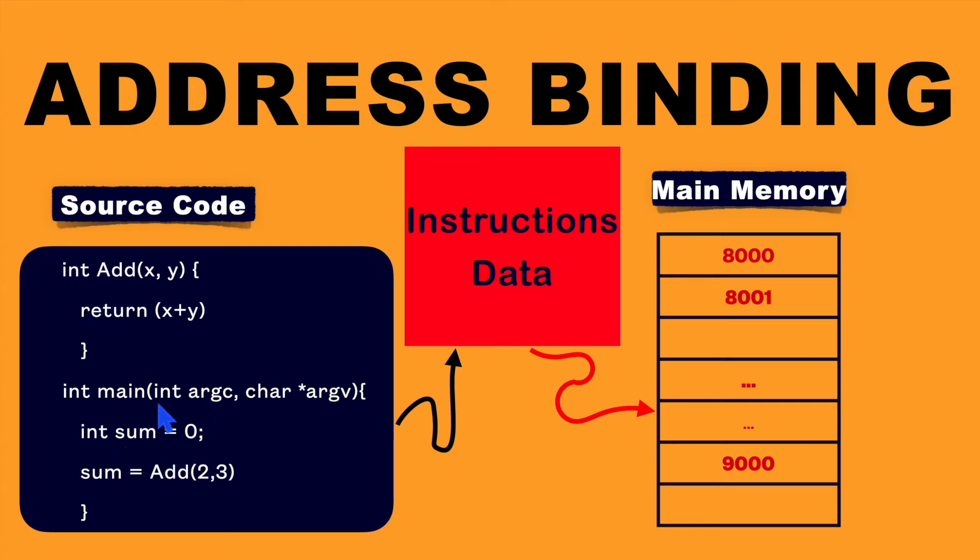That means whatever symbolic items we have, we will have some instructions or data and these instructions and data must be mapped with main memory address or physical memory address.